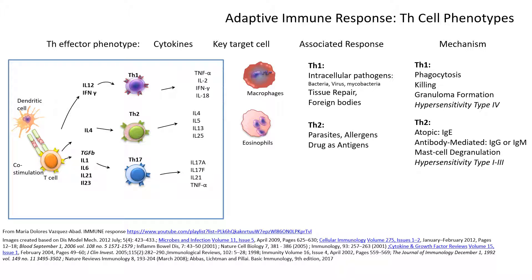The other key phenotype is TH17, which arises when co-stimulation and T cell receptor engagement produce interleukin-1, interleukin-6, interleukin-21, or interleukin-23, all in the presence of TGF-beta. This combination of cytokines with the mandatory presence of TGF-beta differentiates the T cell into a TH17. The cytokines characterizing TH17 are the interleukin-17 cytokines, interleukin-21, and TNF-alpha.